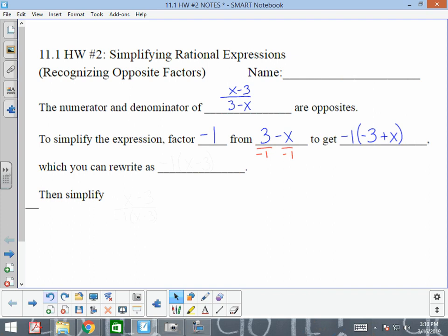So now we get negative 1 parentheses negative 3 plus x, which we can rewrite as negative 1 parentheses x minus 3.